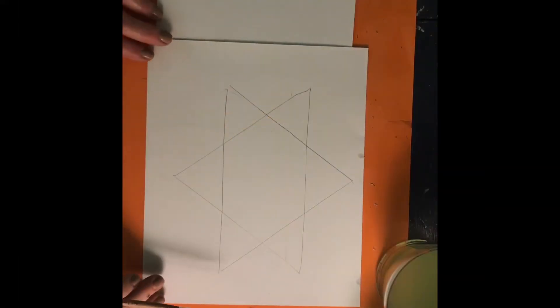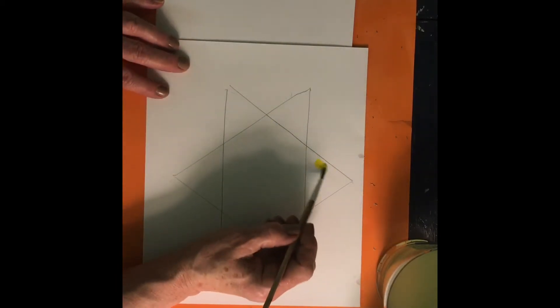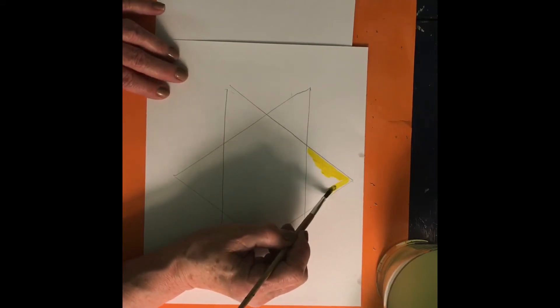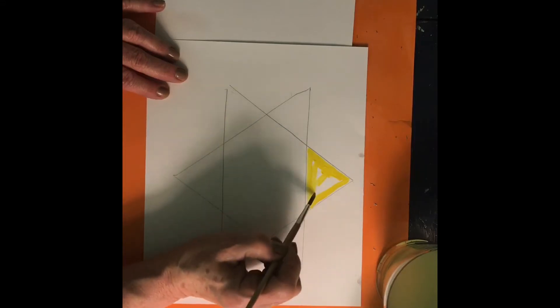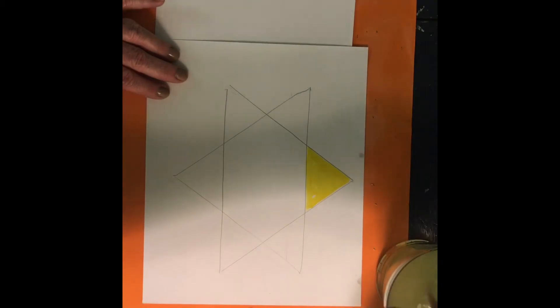We'll begin by painting the primary colors. I will take some yellow and put it in the point of the star. And I will clean off my brush really well.